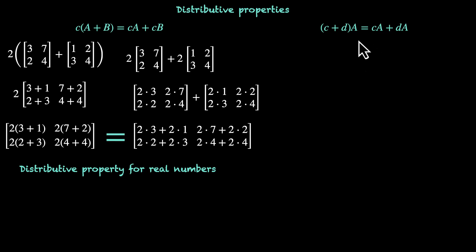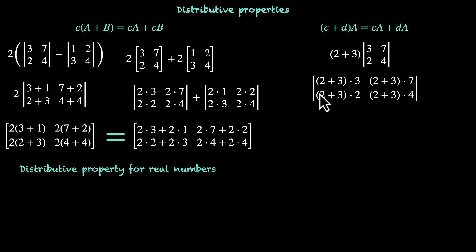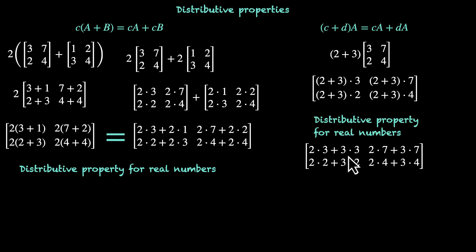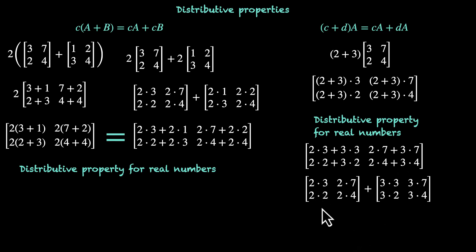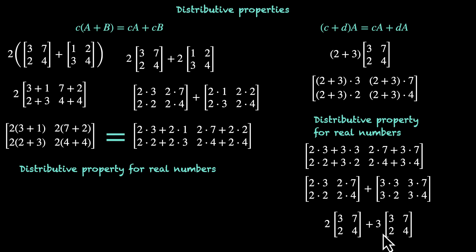Now let's look at (C plus D) times A. Let's take two different real numbers, 2 plus 3, and multiply them with the matrix [3, 7, 2, 4]. Multiplying this scalar by the matrix gives (2+3) times 3, (2+3) times 7, (2+3) times 2, and (2+3) times 4 — all elements get multiplied by (2+3). At this step we can use the distributive property: (2+3) times 3 equals 2 times 3 plus 3 times 3, and the same works for other elements. Here we can split this into two matrices and take 2 out of the first and 3 out of the second, giving 2 times [3, 7, 2, 4] plus 3 times [3, 7, 2, 4]. So we started with (C plus D) times A and ended up with C times A plus D times A. These are our distributive properties.